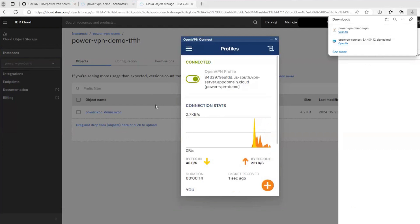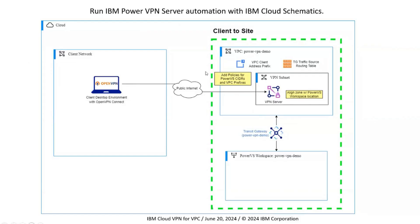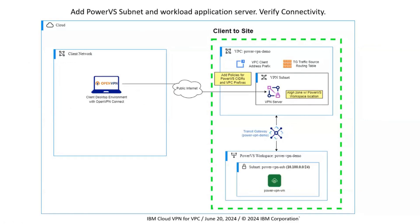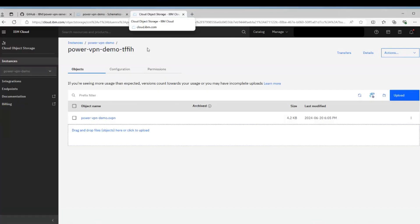Let's take a look at what we've just created. The automation has created everything in the green box: our VPN server inside our VPC, and our transit gateway that connects over to the Power VS workspace. We've connected to that from our OpenVPN Connect client. Now we need to create some actual resources inside the workspace to verify connectivity — we'll manually create a subnet in the Power VS workspace and create a virtual machine instance, similar to creating an application server in your workspace.